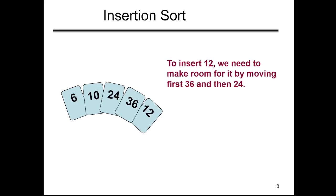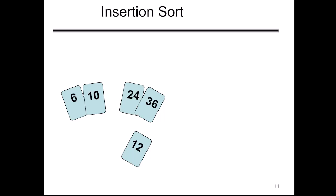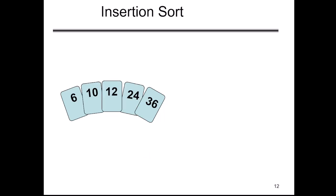Now let us understand the philosophy of insertion sort. Insertion sort works like the way we actually shuffle and arrange our cards in our hand. For example, take a set of five cards with numbers 6, 10, 24, 36, and 12. We pick up 12 and want to insert it at its proper position. We scan each and every item until we find the appropriate location for 12, place it there, and finally we have sorted cards in hand.